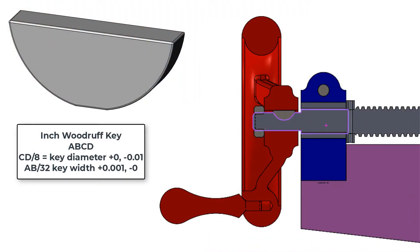Inch Woodruff keys use a numbering system to describe the key. The last two digits of the key number is the nominal diameter in eighths of an inch. Inch keys have a diameter tolerance of plus zero minus ten thou. One or two digits preceding the last two is the width of the key in thirty-seconds of an inch, plus one thou minus nothing.